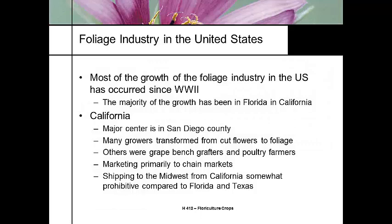Most of the growth of the foliage industry in the United States has come about since World War II, with production primarily in Florida and California. What drove that production is the ability to do protected shipping in climate-controlled, refrigerated trucks. The major center in California is in San Diego County. A lot of those growers were originally growing cut flowers and transitioned into the foliage industry. The California market doesn't ship much over the continental divide because Florida and Texas keep the price down.